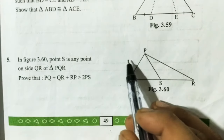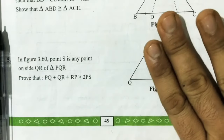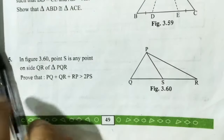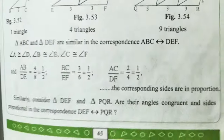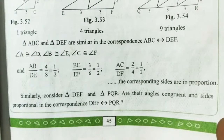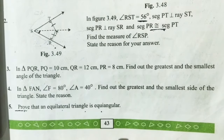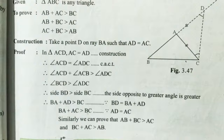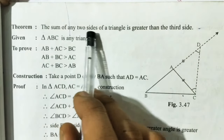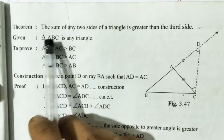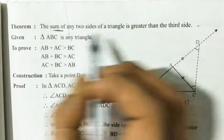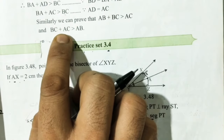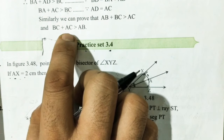We have two triangles: one is PQS (left side triangle) and the other is PSR (right side triangle). The property we will use is that the sum of any two sides of a triangle is always greater than the third side.